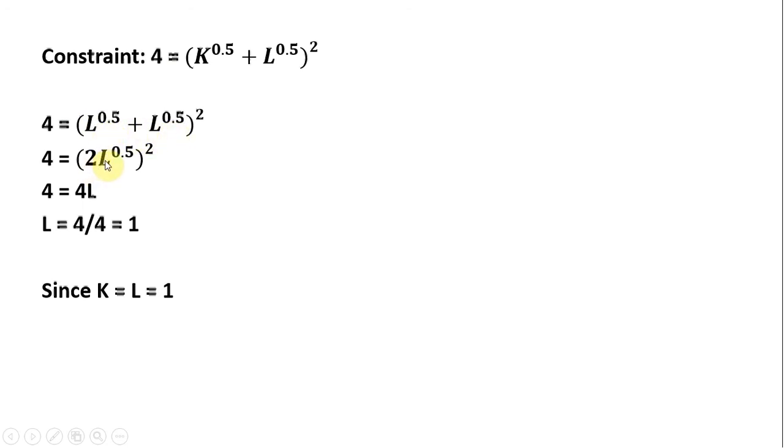In parentheses, we have 2 times L raised to the 0.5. This is all going to be squared, so 2 squared is 4. L to the 0.5 squared is just L. Dividing through by 4, L equals 1. And since K equals L, we saw that again on the last slide, we will use one unit of capital. So L equals 1 and K equals 1 is our cost-minimizing input mix in this problem.